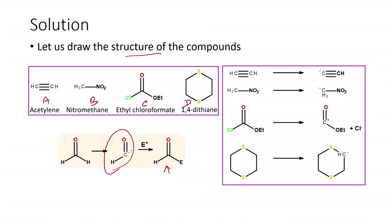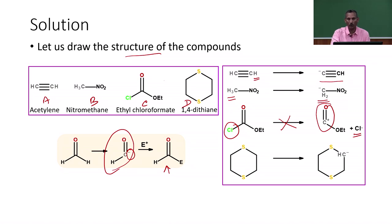For a formyl anion to be formed, we need an anion — a negative charge. Removing the acidic proton from acetylene gives the acetylide derivative. For nitromethane, removing one of the three methyl hydrogens gives the anion. For ethyl chloroformate, the chloride ion is the leaving group; when lost, it gives a carbonyl with a positive charge, so this is not the formyl anion equivalent and can be ruled out.